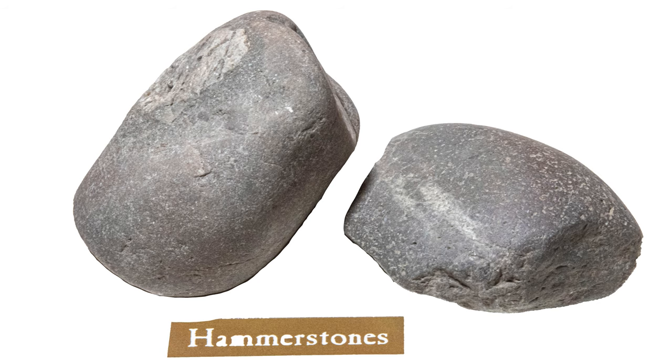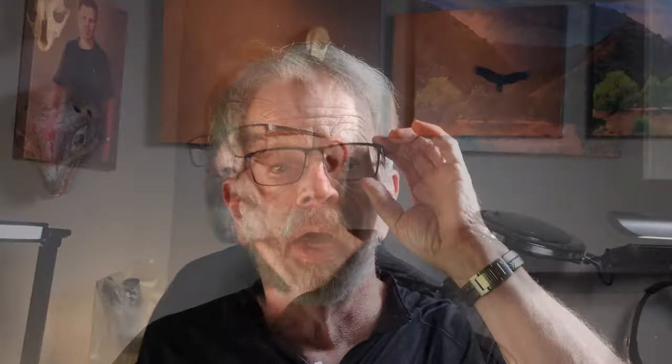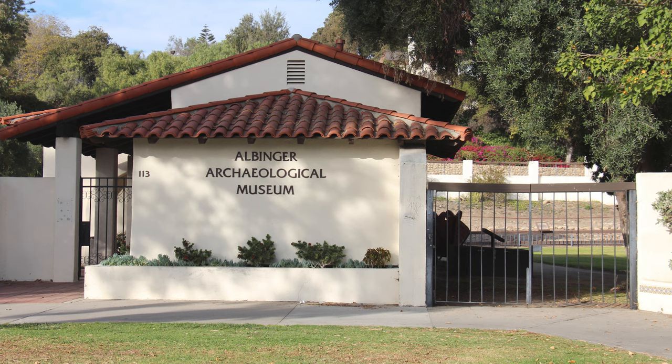I remember once coming across a small site about two square feet in the mountains that consisted of a type of stone called chert, an especially shaped rock we know was used as a hammerstone, plus small flakes that had been knocked off of the chert as the person made a stone tool, possibly an arrowhead. I was in awe that I got to see an individual at a specific task in place. In my own mind, I could see that person sitting there carefully chipping away at the chert, forming a tool. You can see examples of this on exhibit at the Albinger Museum in Ventura.